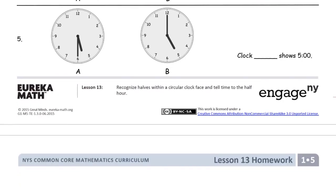Which clock shows 5 o'clock? We want the minute hand going straight up to the 12. We can see the hour hand here is pointing right at the 5. That's clock B.